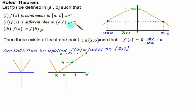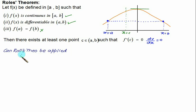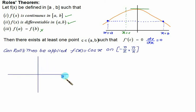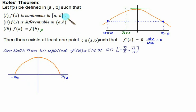Can Rolle's Theorem be applied to f(x) = cos(x) on the closed interval [-π/2, π/2]? Drawing the graph: at x = -π/2, cos(x) = 0; at x = 0, cos(x) = 1; at x = π/2, cos(x) = 0. The function is continuous, is also differentiable, and the values at the endpoints are the same (both equal 0). So all three conditions are satisfied, and we can very well apply Rolle's Theorem.